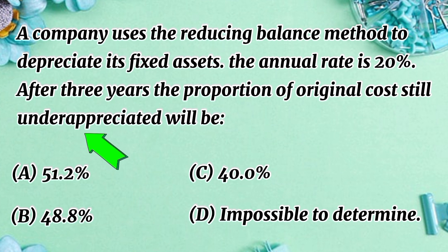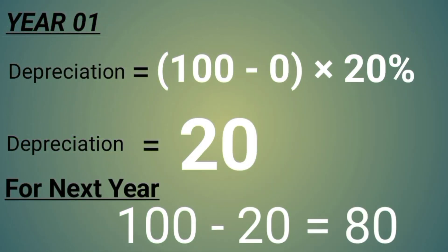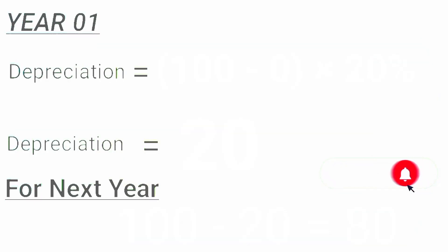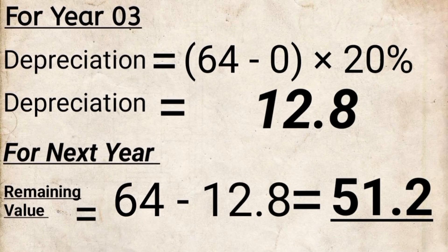We consider the cost as 100 so that the answer will be easy to work out as a percentage. In the reducing balance method, depreciation equals cost multiplied by rate. For the first year, depreciation equals 100 multiplied by 20%, which is 20. Remaining value is 80. For the second year, depreciation equals 80 multiplied by 20%, which equals 16. 80 minus 16 equals 64. For the third year, depreciation equals 64 multiplied by 20%, which equals 12.8.